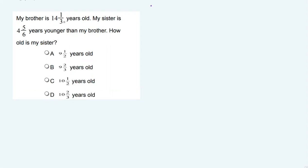It says my brother is 14 and a third years old. My sister is four and five sixths years younger than my brother. How old is my sister?